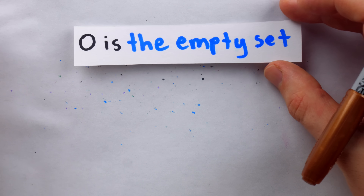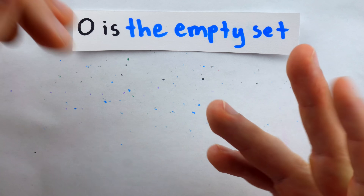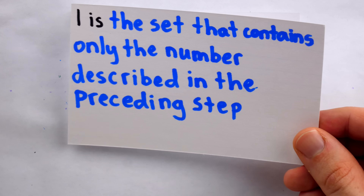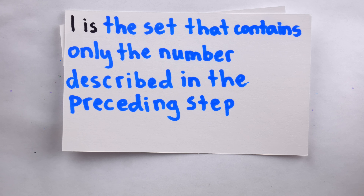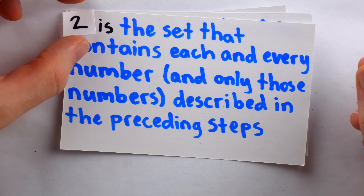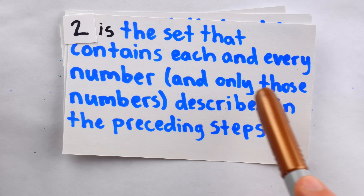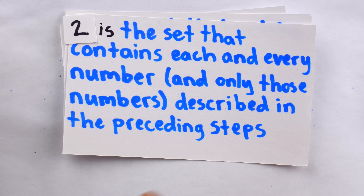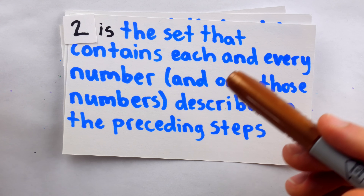With these definitions established, the paradox is resolved through the following infinite sequence of descriptions. First, 0 is the empty set — this description has only 3 words, so it is valid. Then, 1 is the set that contains only the number described in the preceding step, namely the set that contains 0 — again fewer than 20 words. To describe 2, we say: 2 is the set that contains each and every number, and only those numbers, which were described in the preceding steps. Counting the words, that's 17, which is less than 20.